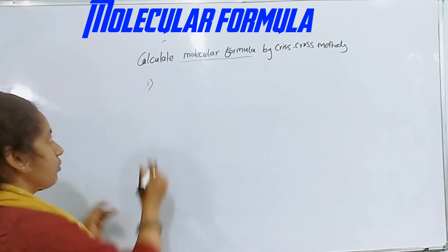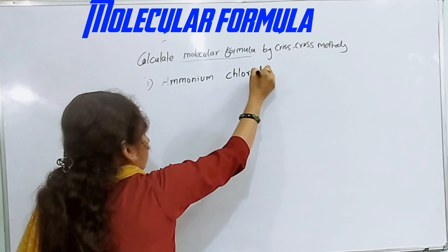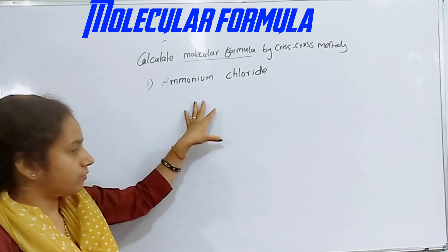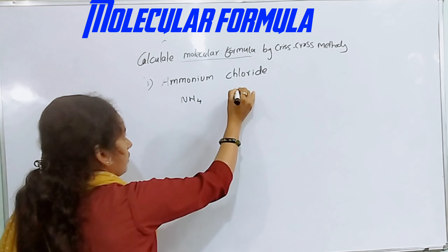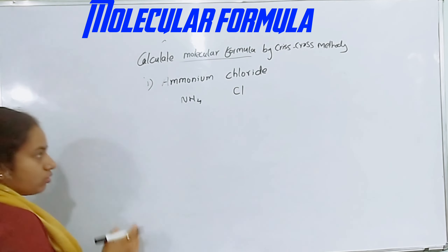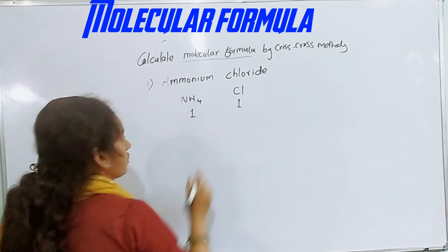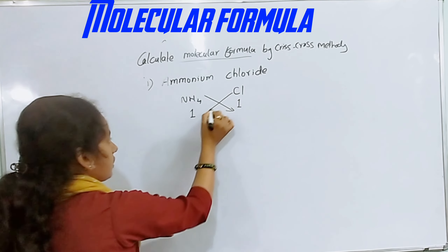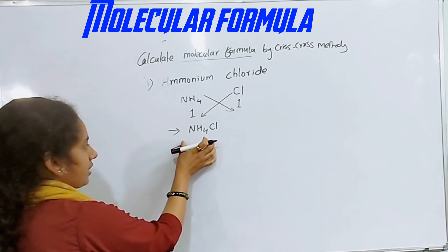Today I am going to show you the ammonium chloride molecular formula. This is the formula. NH4 valency is 1 plus, chloride valency is 1. Using the criss-cross method, NH4 and Cl combine to give NH4Cl.